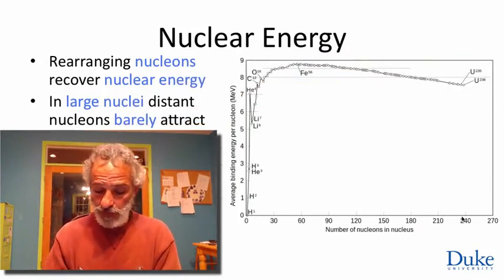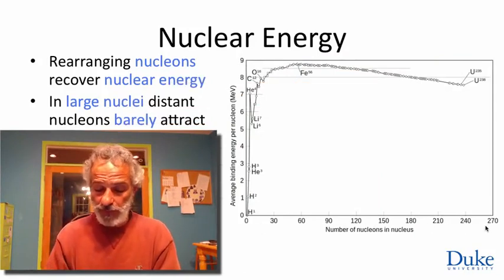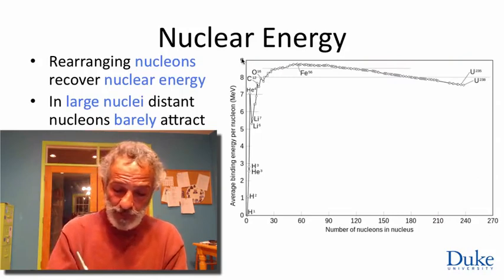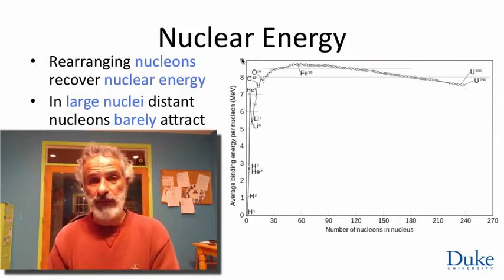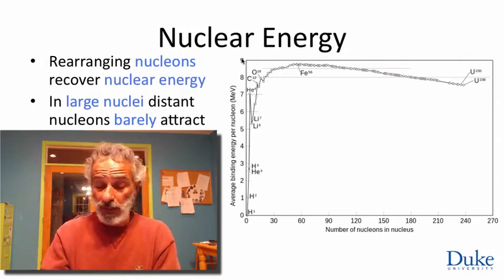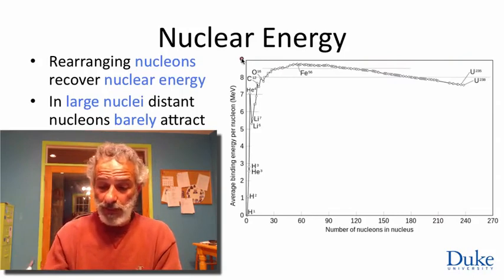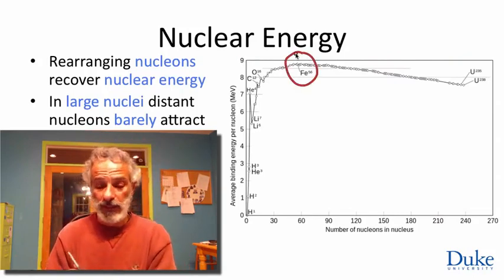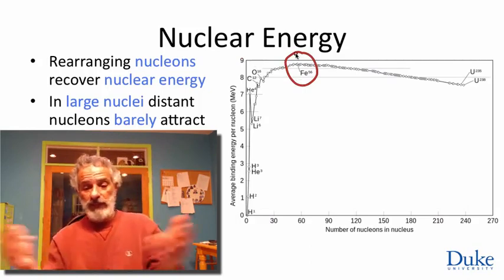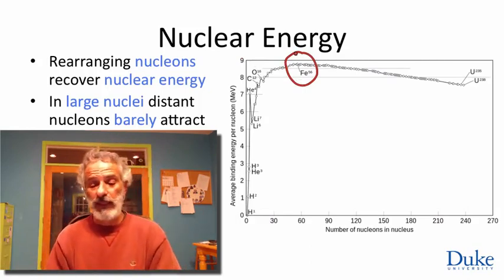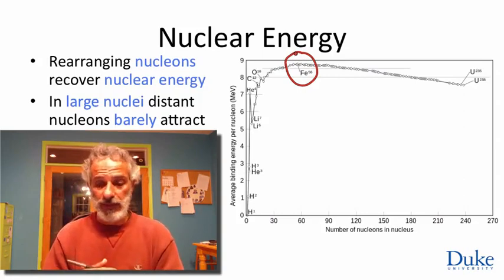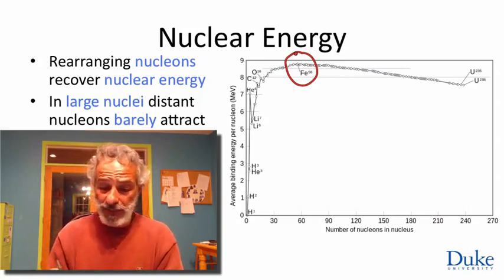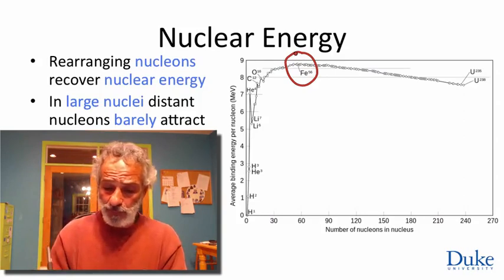What this plot shows us, we have here atomic number or number of nucleons running, mass number running to the right, and the average energy liberated per nucleon going up. We see that the most stable configuration is not a bunch of uranium nuclei, but a bunch, as many as you have nucleons for, of iron nuclei, the sort of intermediate range. Intermediate size nucleus is the most efficient packing.